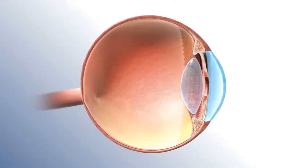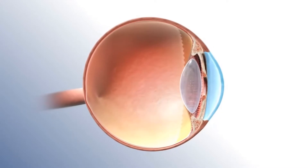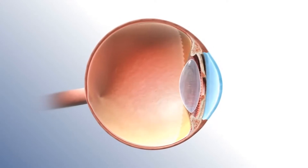Nearsightedness and farsightedness are two terms that we use to explain the error that can occur in the shape of the cornea. That error leads to light focusing in front of the retina if you are nearsighted, or behind the retina if you're farsighted.